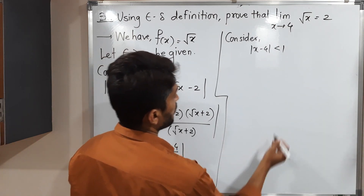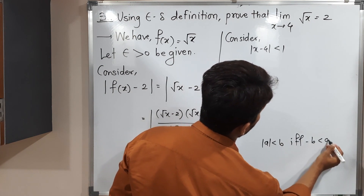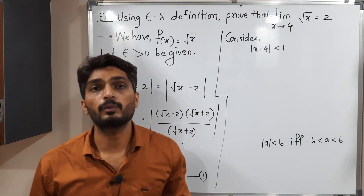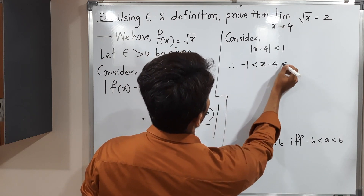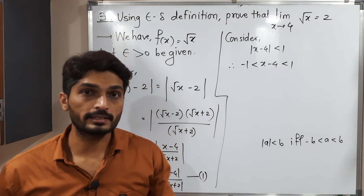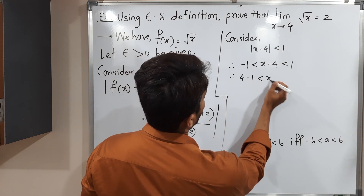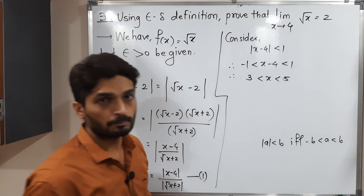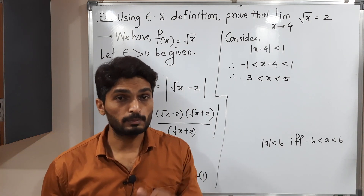I hope you remember the result: |a| < b if and only if -b < a < b. This is a very important result we use several times. Applying it here: from |x - 4| < 1 we get -1 < x - 4 < 1. Adding 4 to all sides: 3 < x < 5. My focus is on bounding root x + 2, so I need to adjust for that.